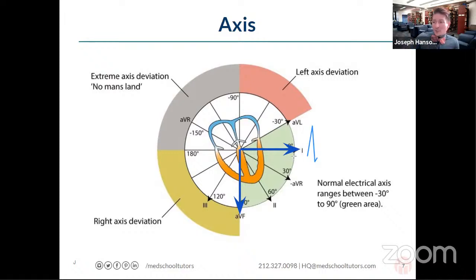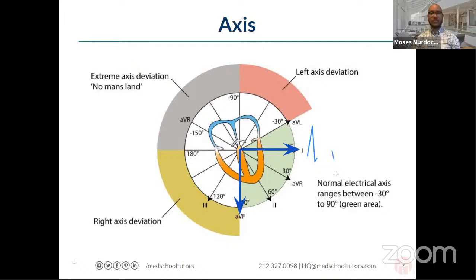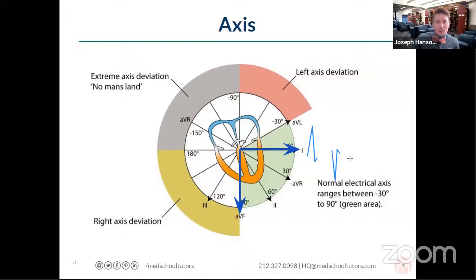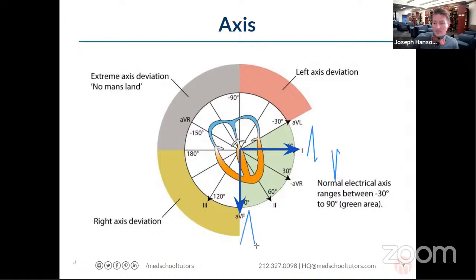When electricity goes towards lead one, it's positive; when it goes away, it's negative. The same is true for AVF — electricity pointing towards AVF gives a positive deflection, away gives negative. With that, you can determine where the axis is merely by looking at lead one and AVF. A positive deflection in both lead one and AVF means electrical activity is pointing down and to the left — a normal axis.